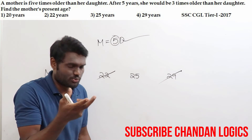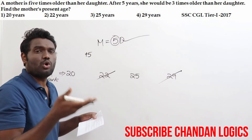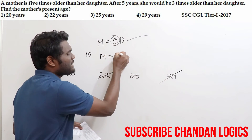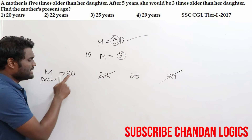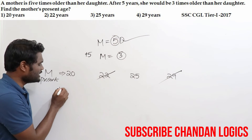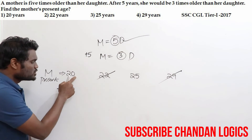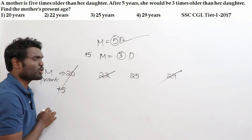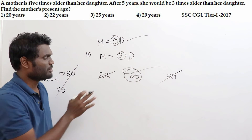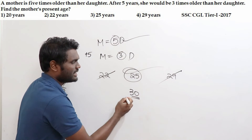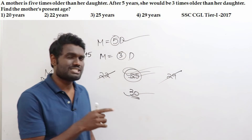We have one more statement: after 5 years, the mother will be 3 times older than the daughter, so after 5 years the mother's age must be a multiple of 3. 20+5=25 — is 25 a multiple of 3? No — wrong answer. So the answer must be 25. Verifying: 25+5=30 — is 30 a multiple of 3? Yes. So the answer is 25 years. This question was asked in the CGL examination in 2017.